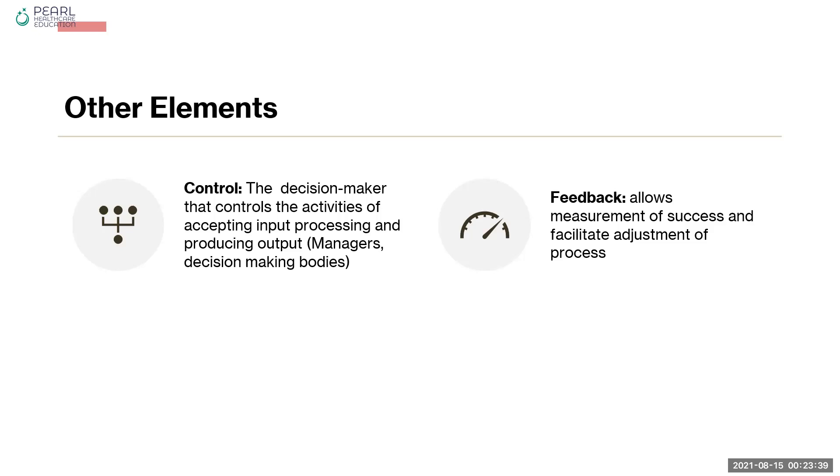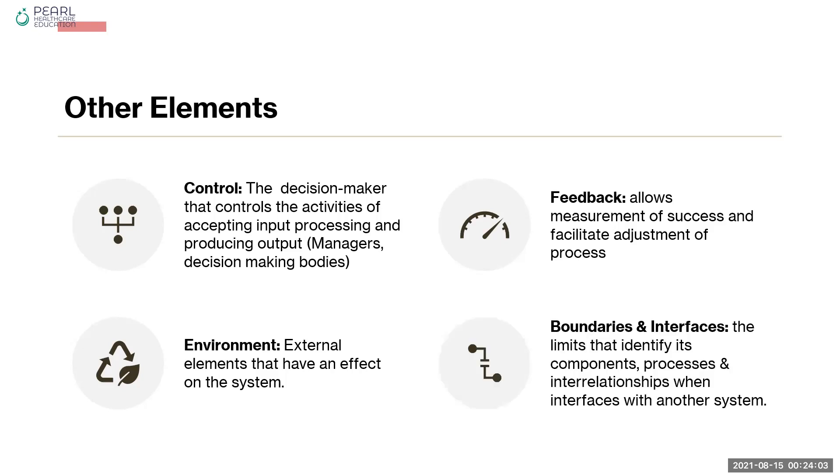Feedback is something which allows the measurement of success, which helps us understand if the whole process has been successful and if the output has been what we wanted, or is there any change needed in the whole process. Environment refers to the external elements which are not in our control and which are surrounding the area where we are working and have an impact on the system. Boundaries and interfaces means the limits within which the systems are working.